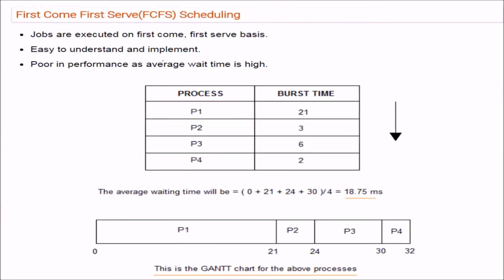First Come First Serve, or FCFS scheduling, means jobs are executed on a first come, first served basis — the job which arrives first will be served first, and the next job after it. This is quite easy to understand and implement, no complex logic is involved, but the performance is poor because average waiting time can be quite long.